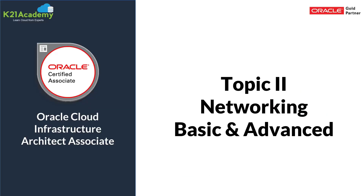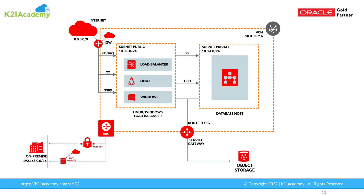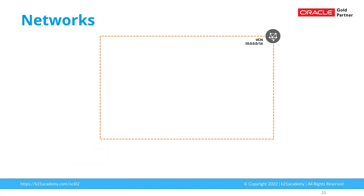Now let's look at networking, which covers both basic and advanced networking. This is a network diagram, and if you're coming from no networking background, initially it might sound a little cryptic but it's totally doable and easy to understand. So let's try to understand what all things you need to learn in networking for OCI Architect Certification. Let's assume this is a network — you need to understand what is a virtual cloud network or VCN.